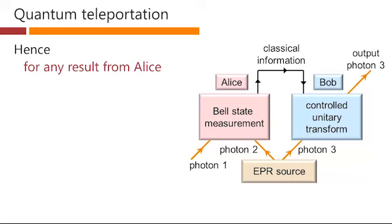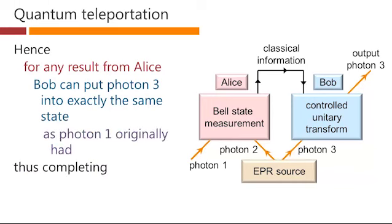Hence, for any result from Alice, Bob can put photon 3 into exactly the same state as photon 1 originally had, thus completing the teleportation of the quantum mechanical state of photon 1 onto photon 3. Thank you.